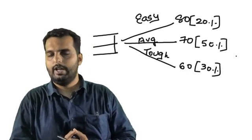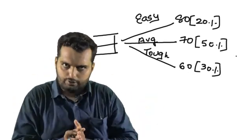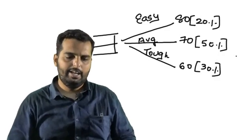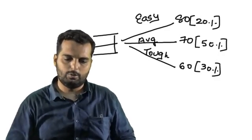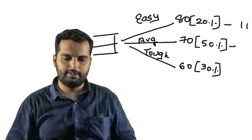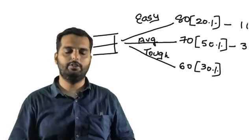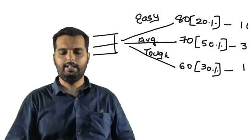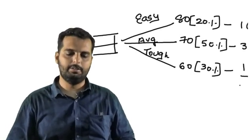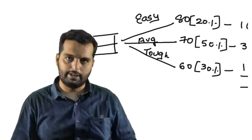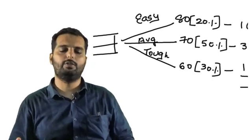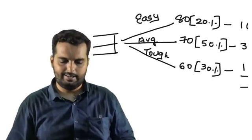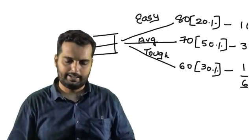What we will do is, we will take a weighted average of this. So now let us say 80 into 20%, that turns out to be 16. 70 into 50% turns out to be, let us say, 35. And 60 into 30% turns out to be, let us say, 18. So if you add up these three numbers, you get the answer as 35 plus 16, that is 51. 61, 69 is the mark that you are expecting.